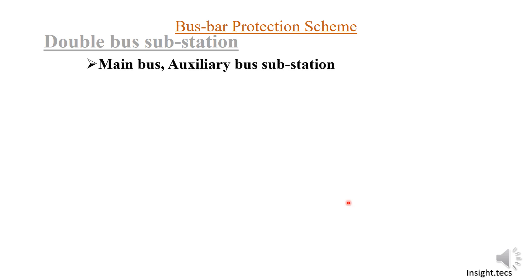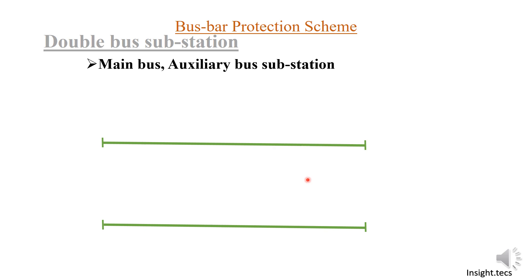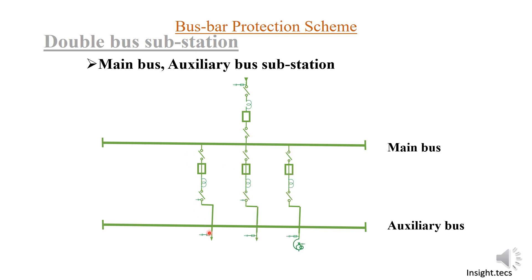In today's video we will learn in more detail about the main bus and auxiliary bus substation. This is the main bus and this is the auxiliary bus. It has an incoming feeder and a transformer as the outgoing feeder. This scheme also has a bus coupler arrangement similar to the two bus system. The auxiliary bus has a selection isolator that selects whether power is to be transferred through the main bus or through the auxiliary bus, with one extra isolator provided for this selection.